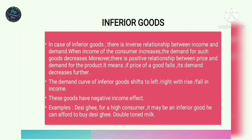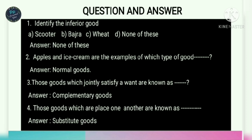Whether a good is normal or inferior varies from man to man, place to place, and time to time. To identify: from the options scooter, bajra, wheat, and none of these — the answer is none of these. Apples and ice creams are examples of normal goods. Goods that jointly satisfy a want are complementary goods, and goods placed in place of one another are substitute goods. Thanks for watching — share and subscribe to my channel.